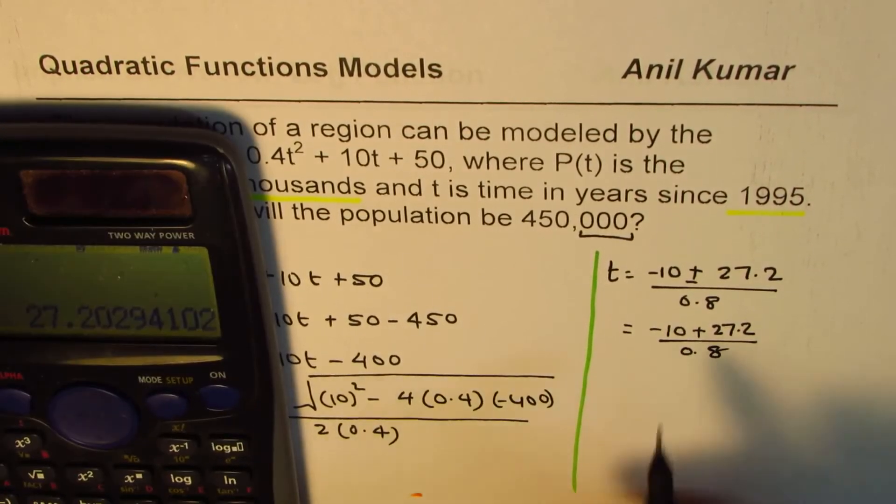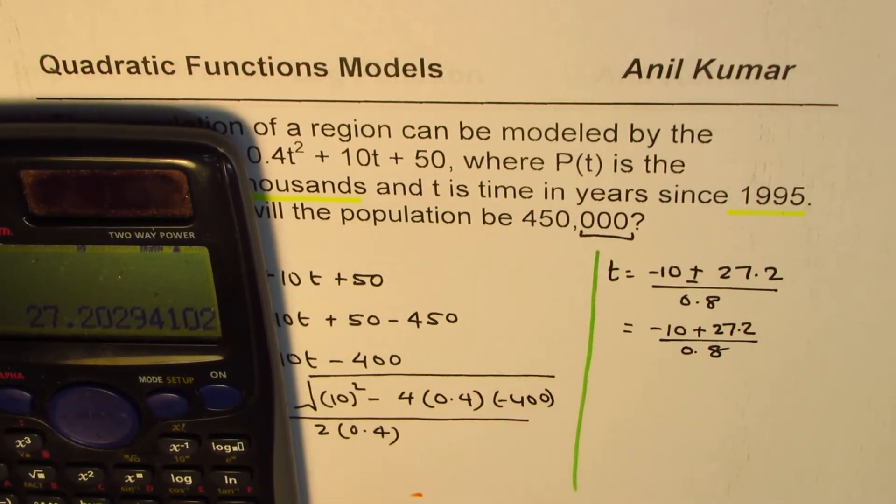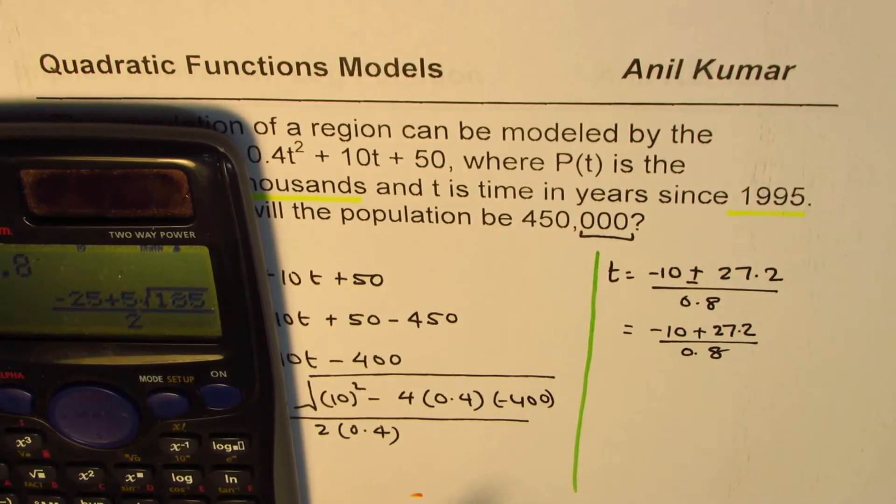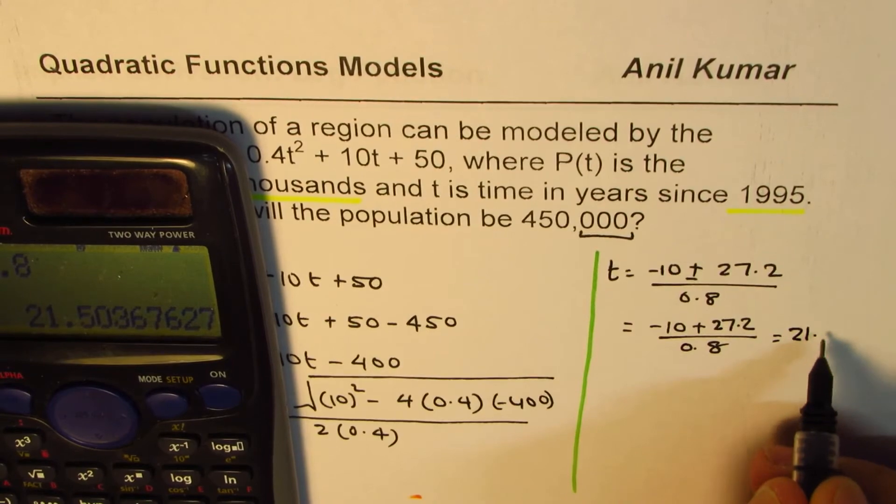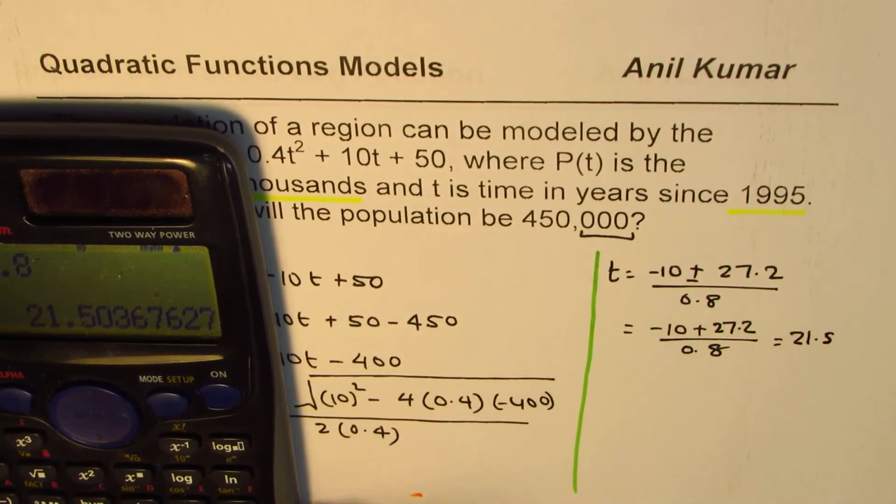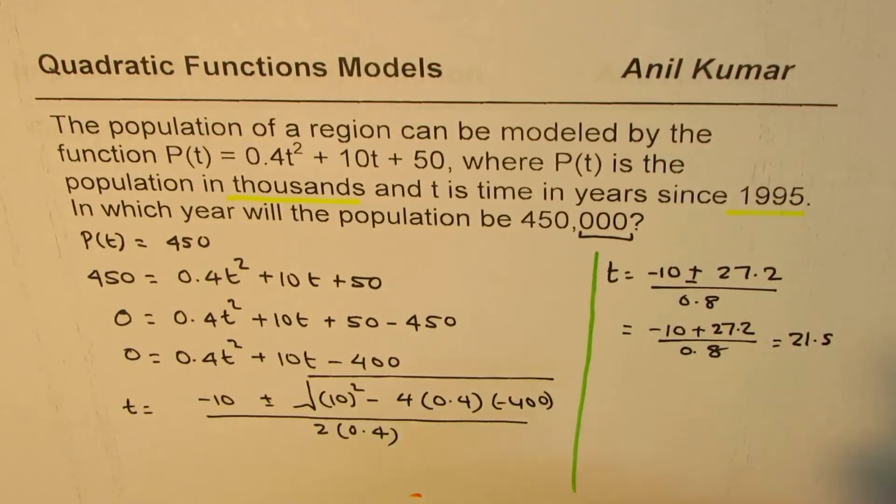So I will take away 10 then divide by 0.8. So -10 divided by 0.8 equals, in decimals, 21.5. So t is 21.5.